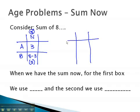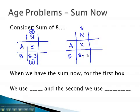When we don't know the first person, we end up with a subtraction problem. Again, if they have a total of 8 and the first person is x, the second person becomes the subtraction problem: total, or 8, minus x. We find that when we have the sum, for the first box we will use x, and the second box we will always use total minus x. Let's take a look at some examples where we can see this play out.